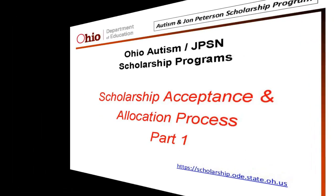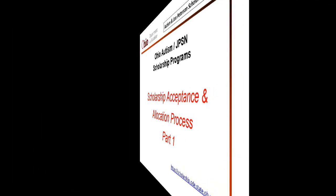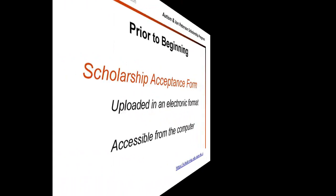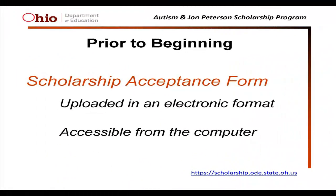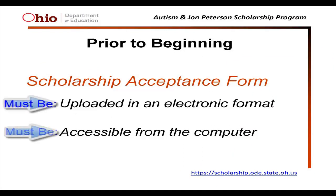Prior to starting the acceptance process, you'll need to have your SAFE user ID and password, and the Autism Acceptance form scanned and saved in a less than 2MB file accessible on the computer you're using.